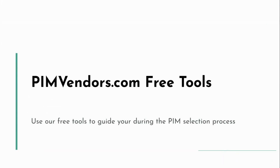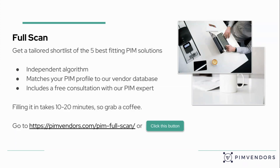Which is a great bridge to our PIMVendors.com free tools. You can use our free tools to guide your PIM selection process. Our main tooling is the full scan — an independent algorithm that helps you determine your PIM profile, and we match that profile based on your requirements with our vendor database. As soon as you've filled in the full scan, we'll reach out to schedule a consultation with our PIM expert, which gives us qualitative additional input to provide the best independent shortlist for your needs. It takes about 10 to 20 minutes, so grab a coffee and follow the link below.